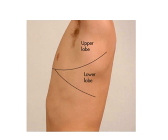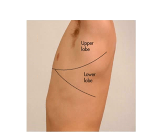The left lung is quite easy because it does not have a middle lobe. So you just draw the oblique fissure in the same pattern as the right oblique fissure, which will divide the left upper lobe and the lower lobe.